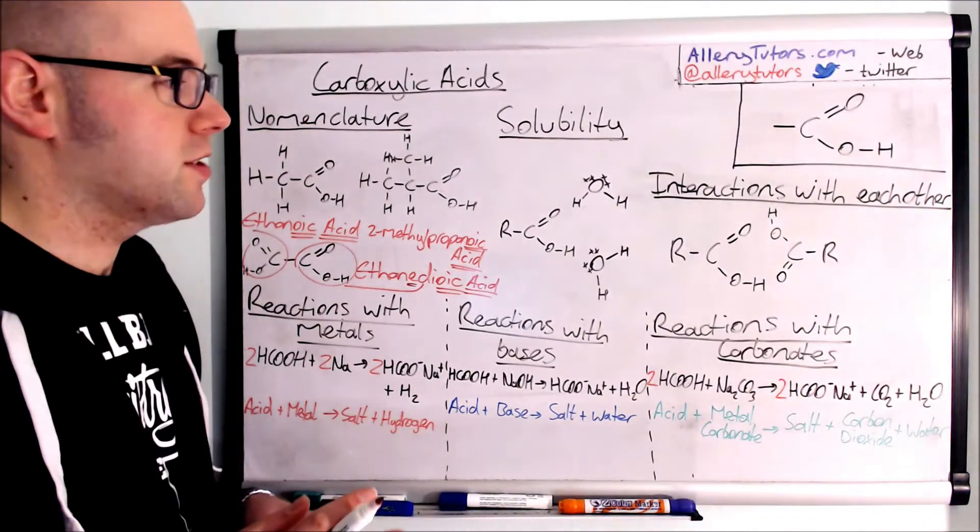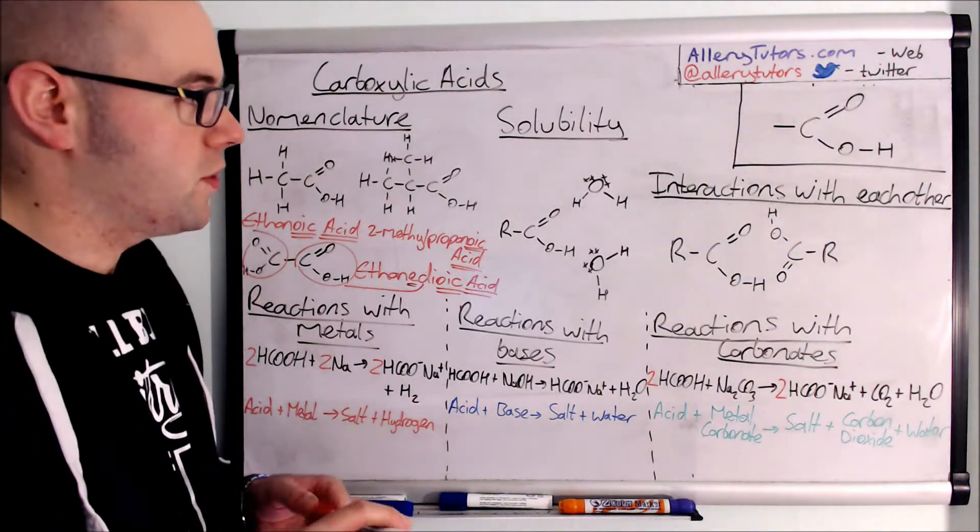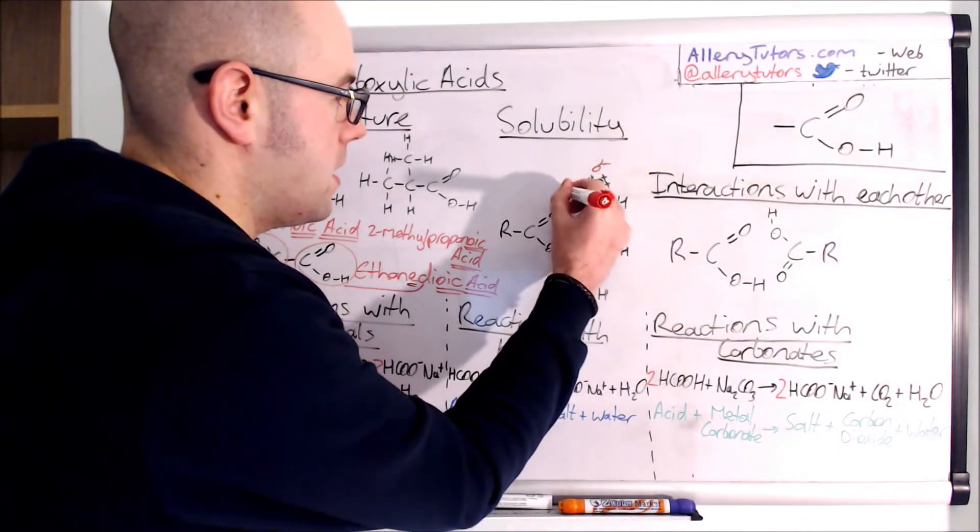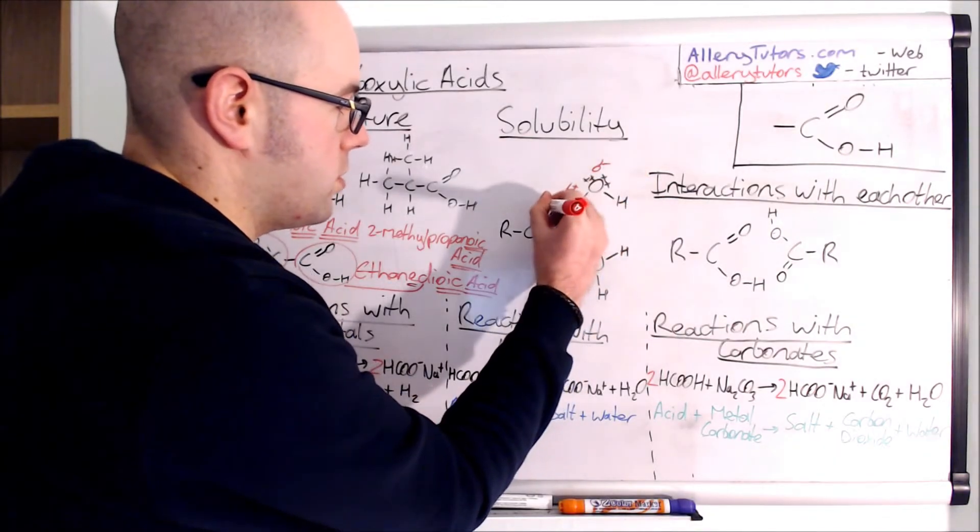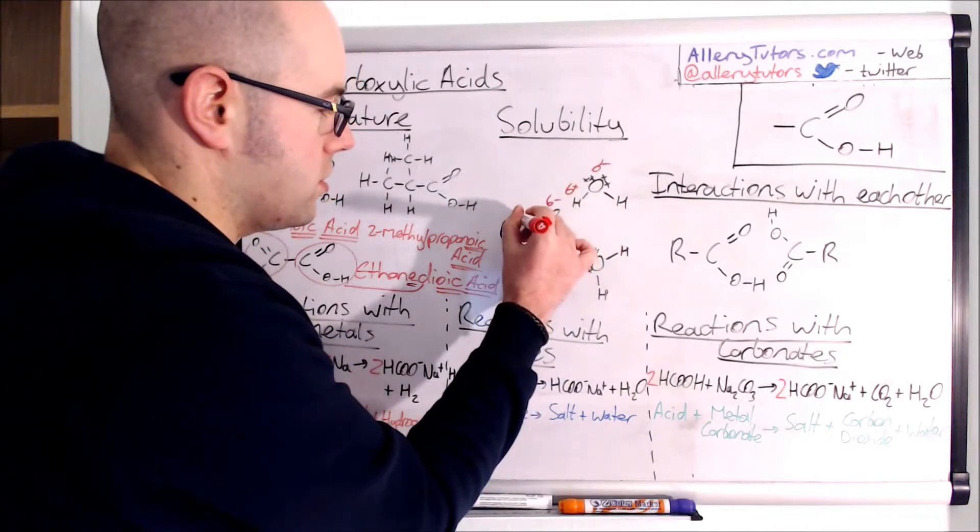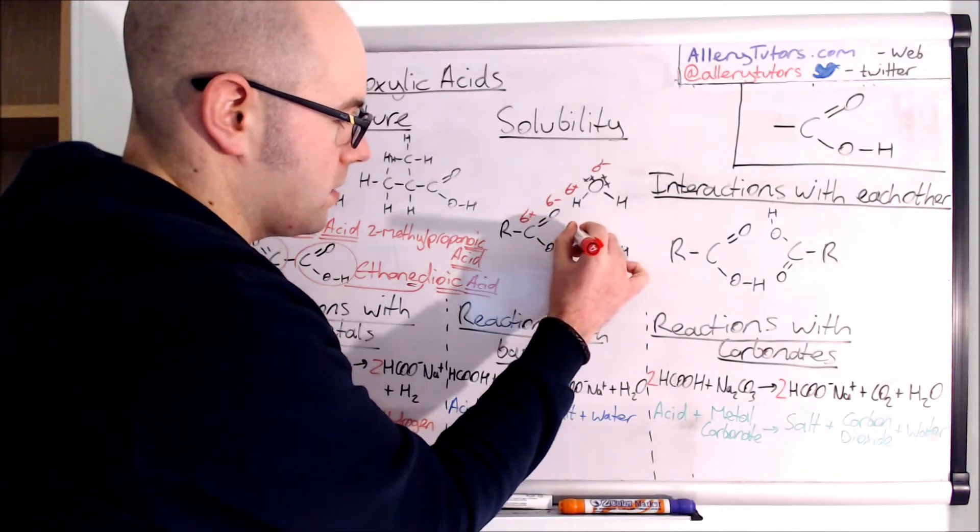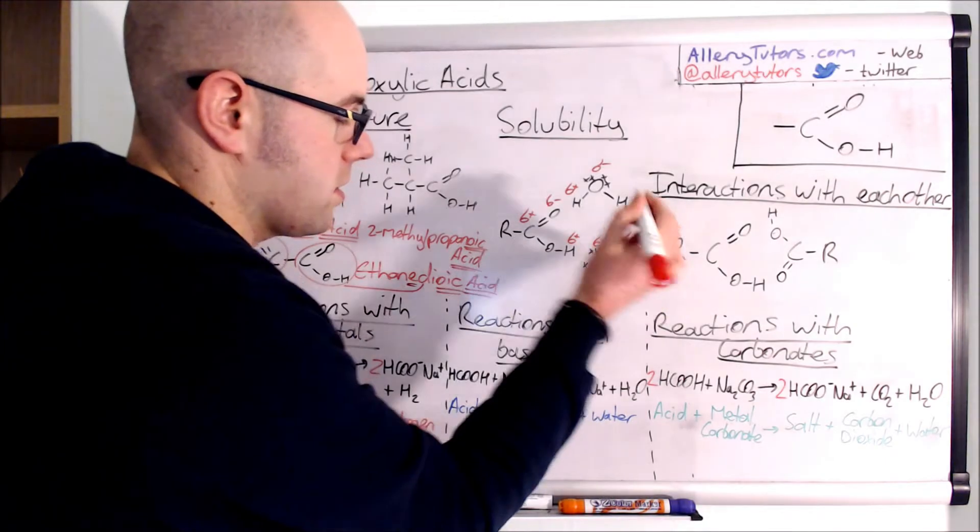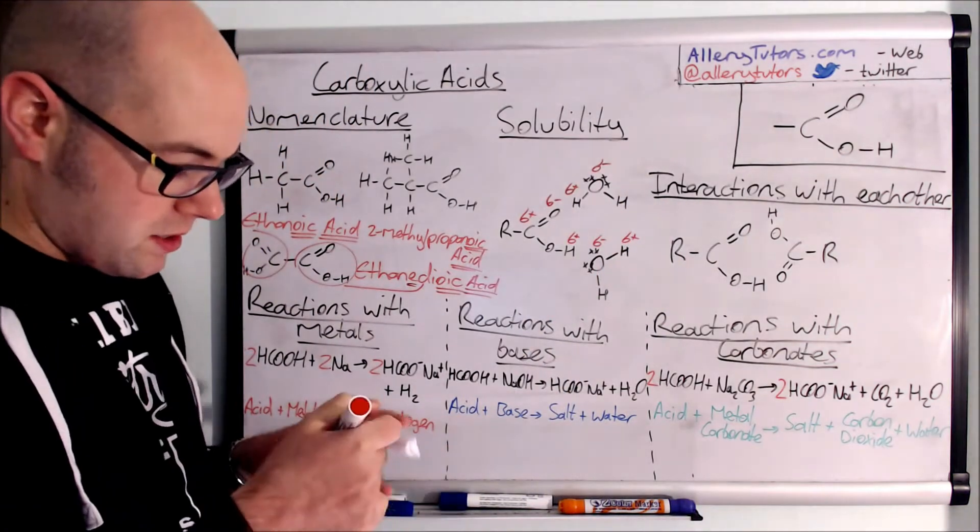So drawing a diagram to illustrate how this works is pretty straightforward. Here's our oxygen. We're going to put a delta negative on there, delta positive on the hydrogen, delta negative on that oxygen there, delta positive on there. This is going to be delta positive, delta negative on the oxygen, delta positive on there. So we're just trying to put as many of these things on as we can.